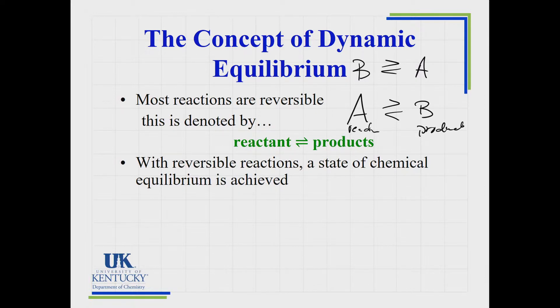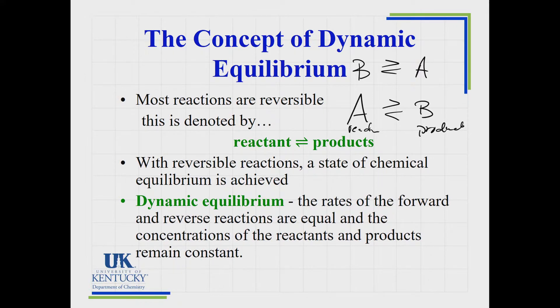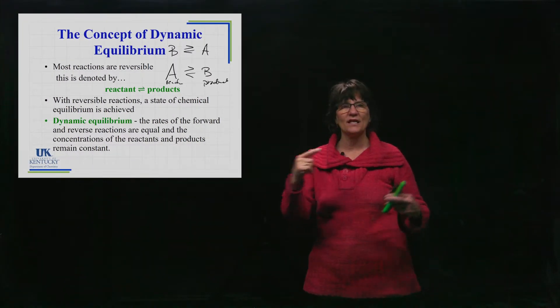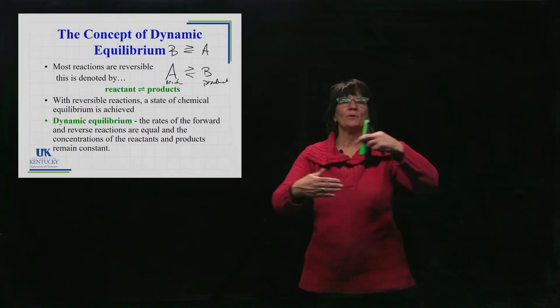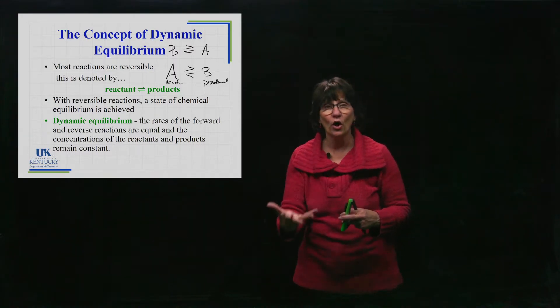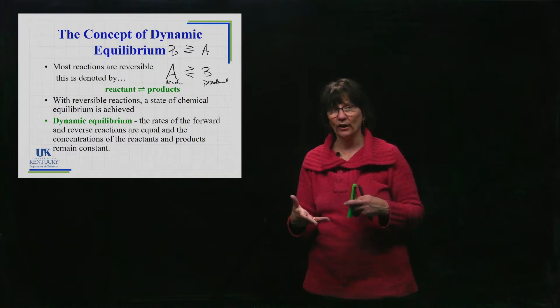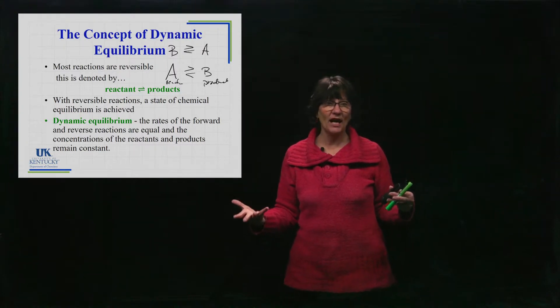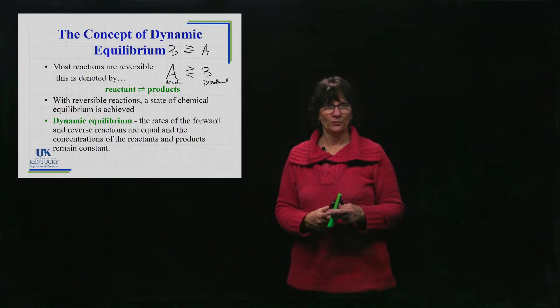When you have a reversible reaction like this, you're going to eventually reach a state of chemical equilibrium where every time the forward reaction takes place, the reverse reaction will take place at the same rate. If the rate of the forward reaction takes place at the exact same rate that the reverse reaction is taking place, you have reached this state of dynamic equilibrium. There's still something going on, so that's why we use the word dynamic.